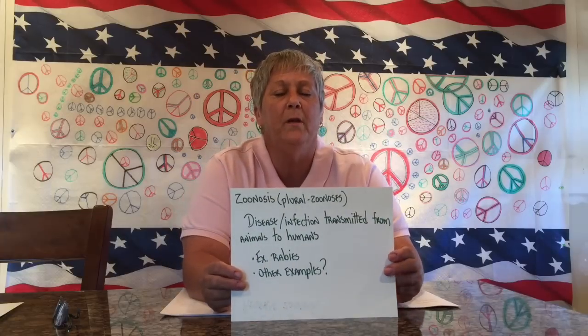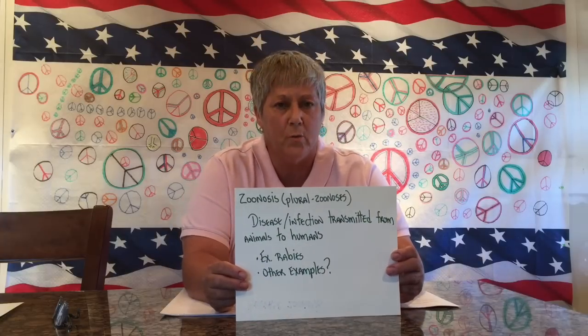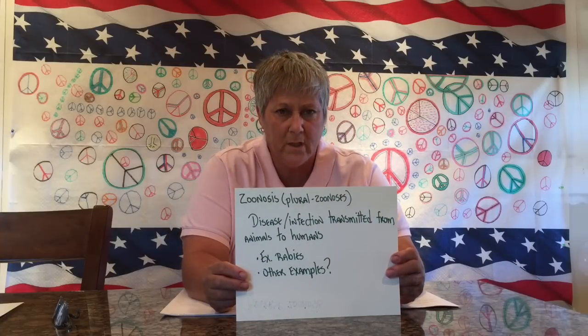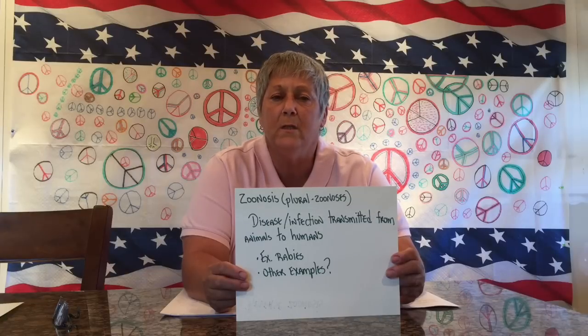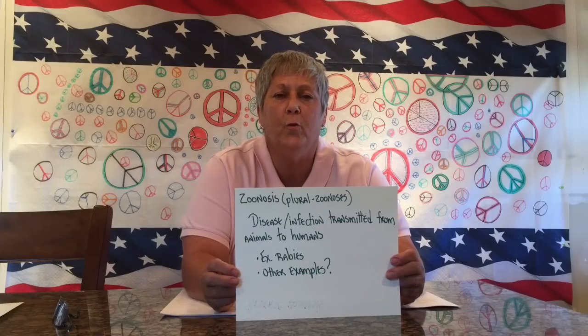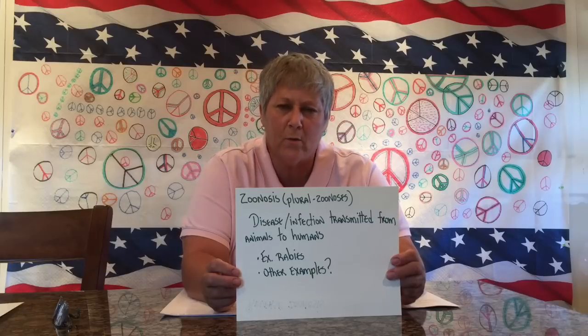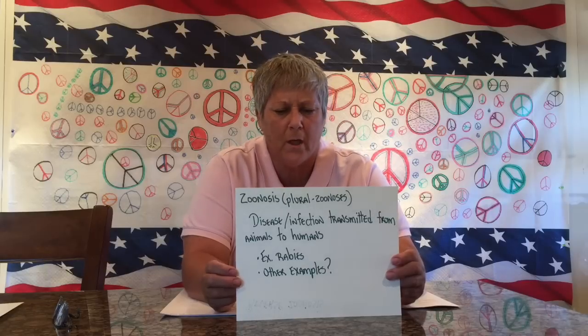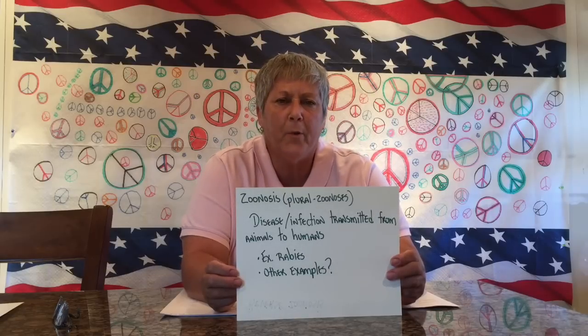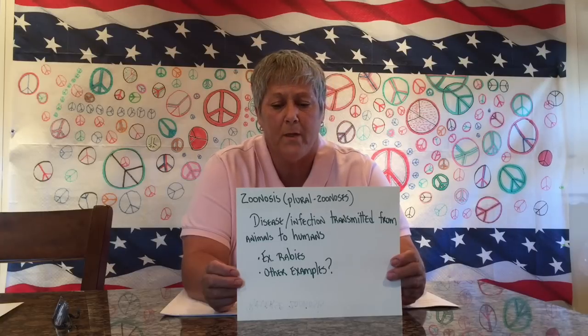Septicemia. The other term — and I know we've done this one before — would be the term zoonosis. Zoonoses is the plural form of the word, and this refers to diseases that are transmitted between animals and humans, or could be a parasitic infection. An example of a zoonosis would be the disease known as rabies.